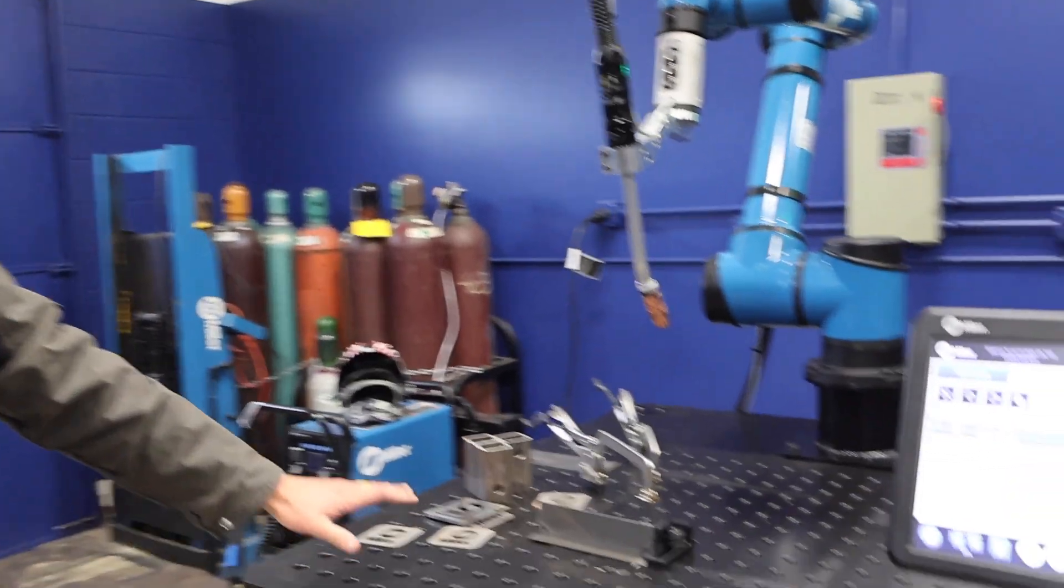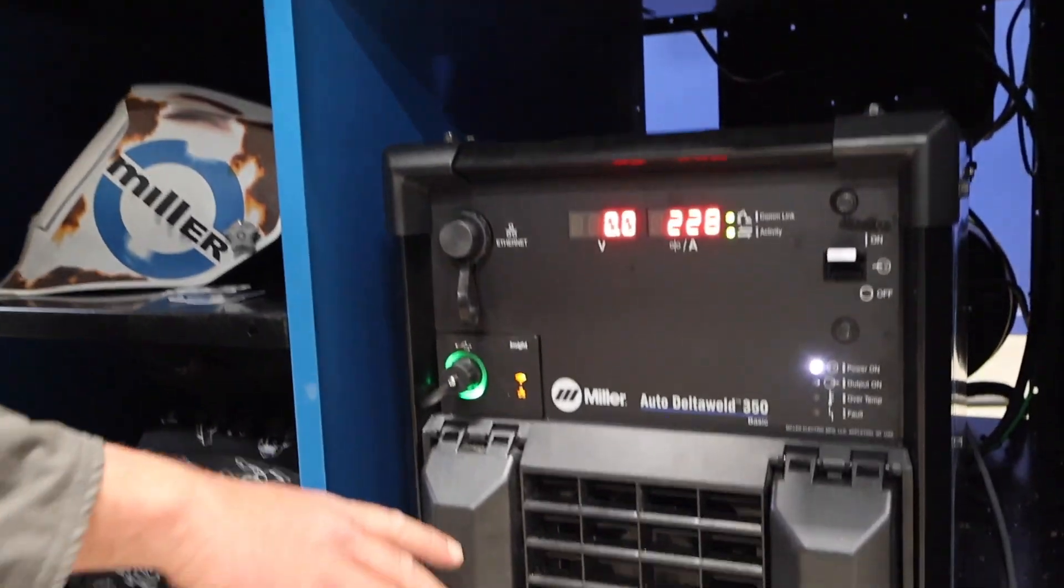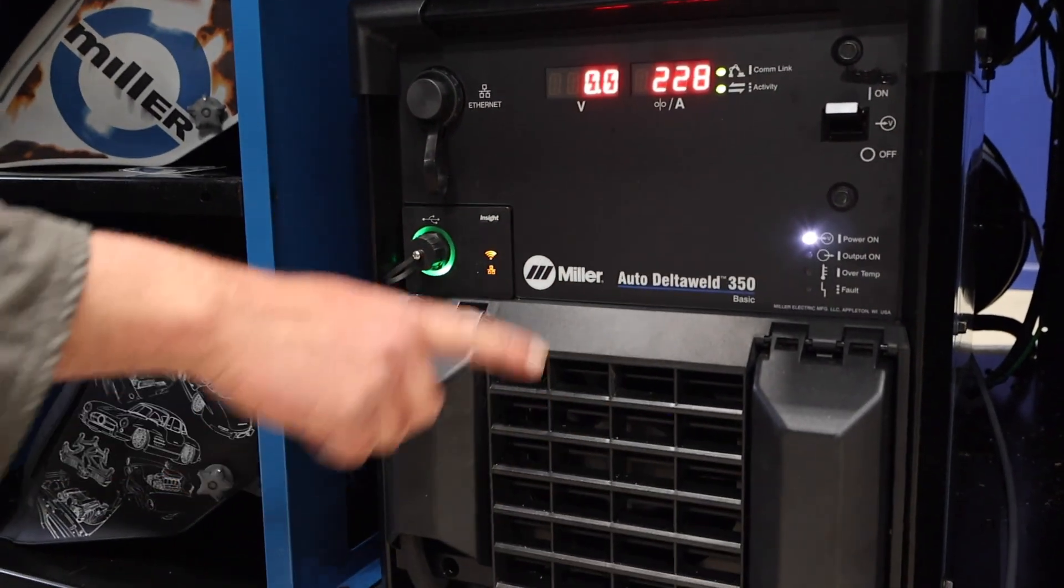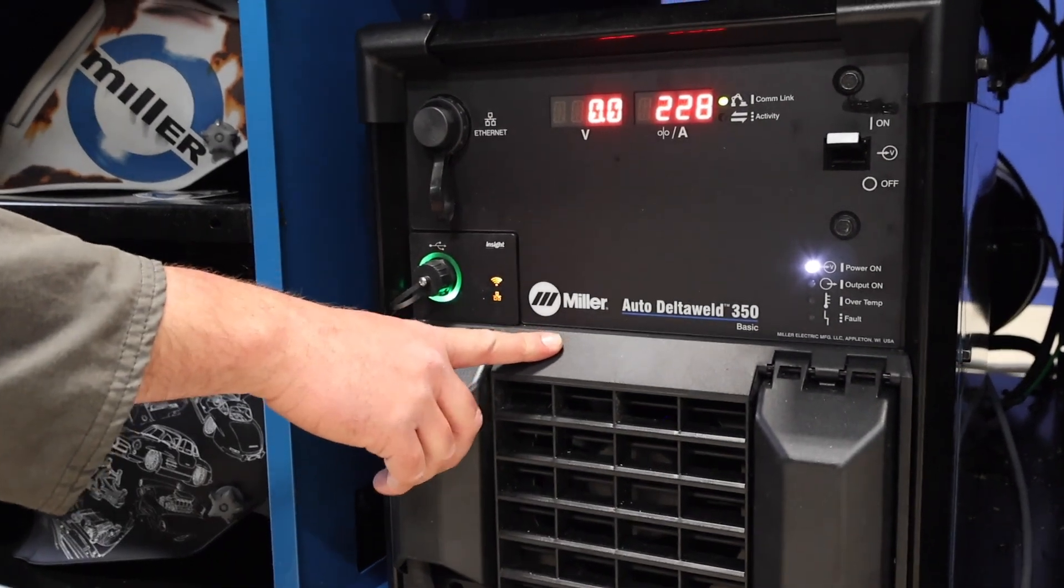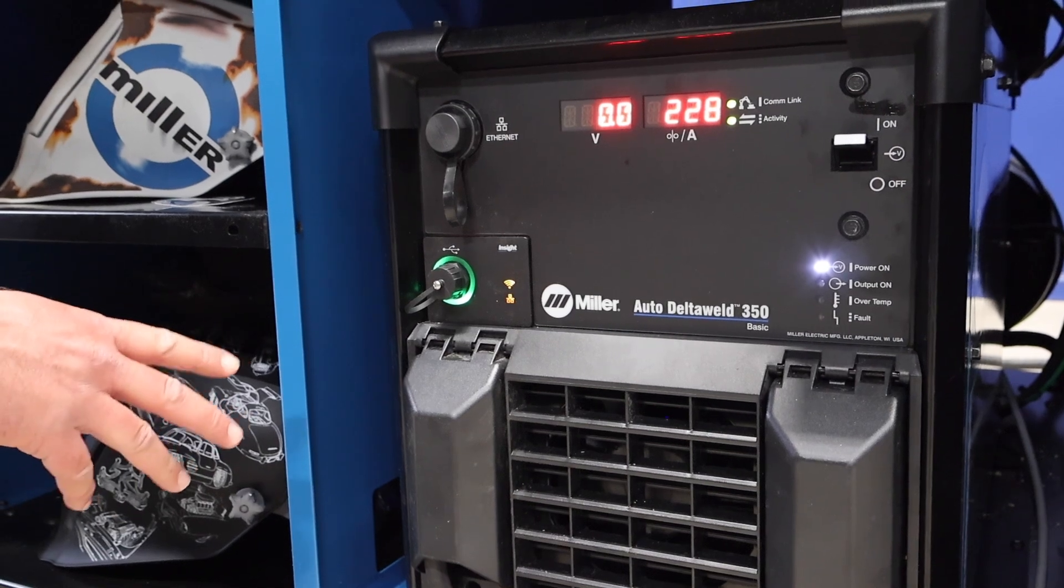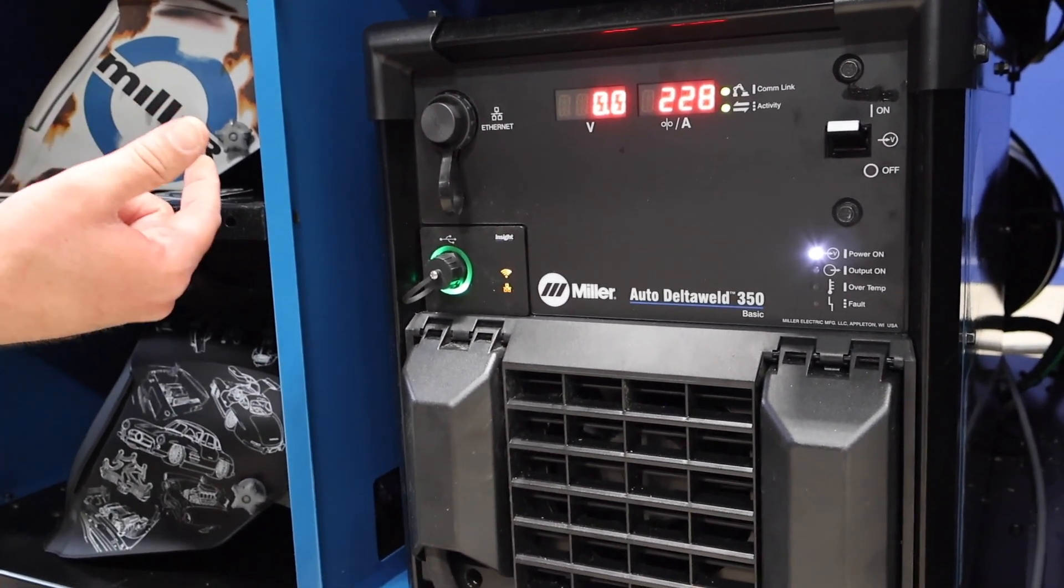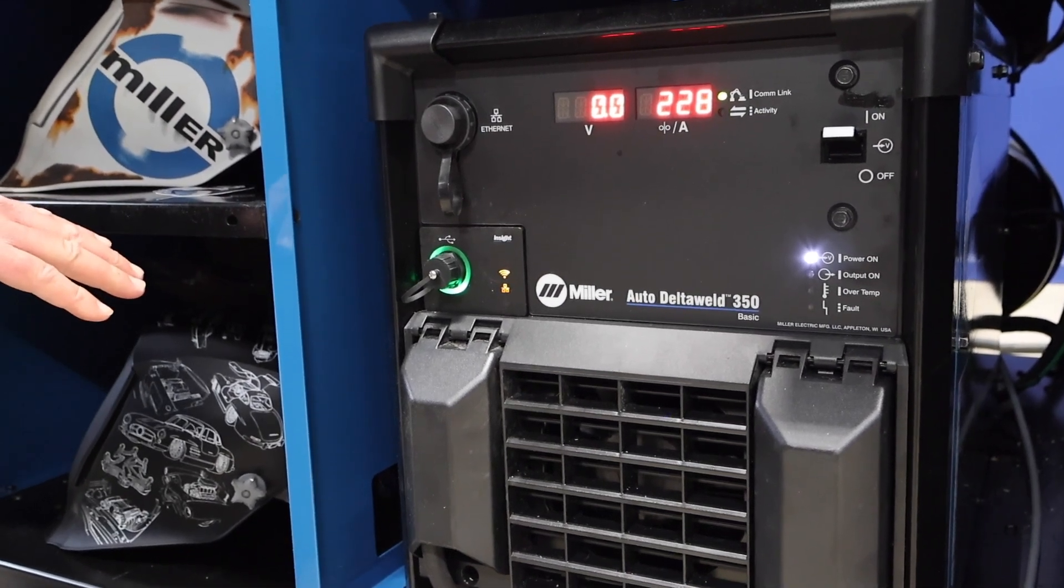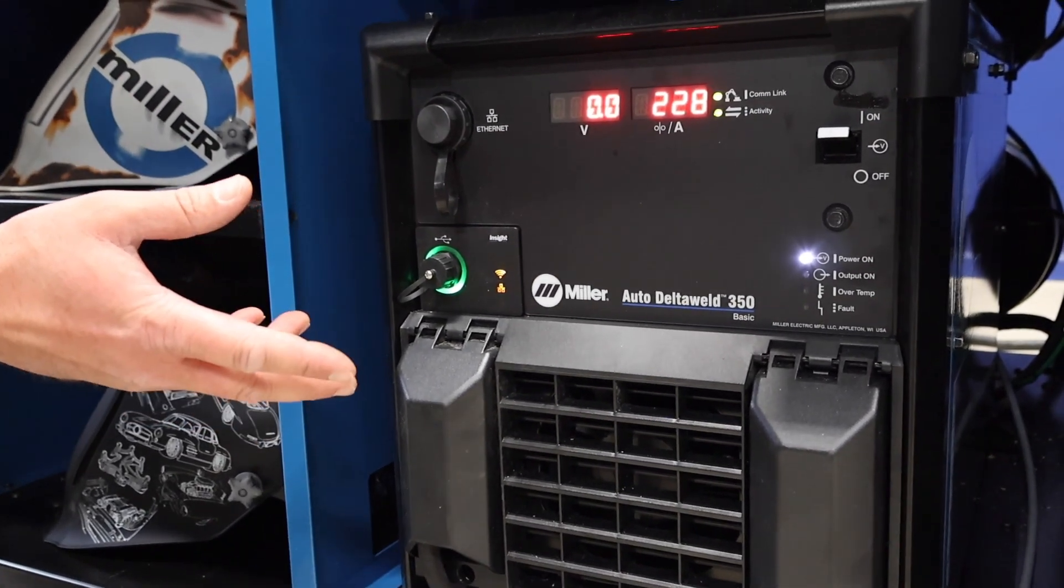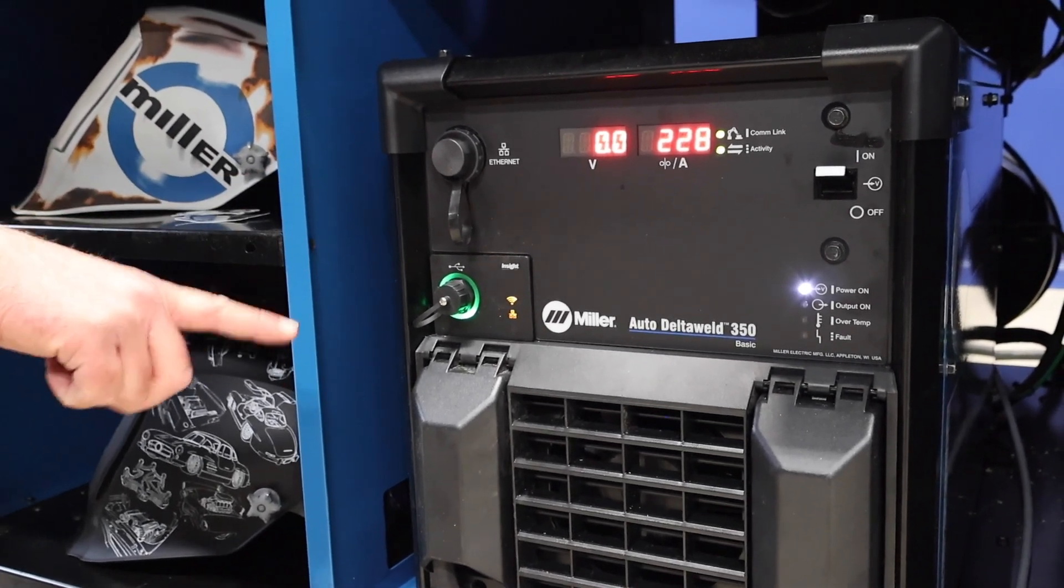This unit comes with the Auto Delta Weld 350. There's other packages on it. This is the brand new Auto Delta Weld 350, the most popular package right now on the market. 350 amps, it is single phase capable so you do not have to have three phase, but it'll do three phase as well. Today we're running on single phase 230.